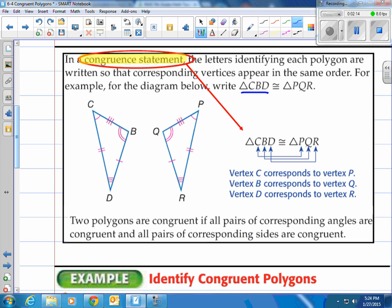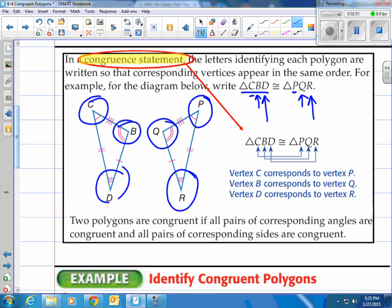Once you write this first one, you have it already set as to how you have to write the second one. Notice you wrote down C first. That means it has to match up with P over here because those two are congruent. Same with B here, it matches up with Q. And our last one is D and R, those go together. So the order matters. Once you say CBD, then you have PQR, you have to put it in that order.